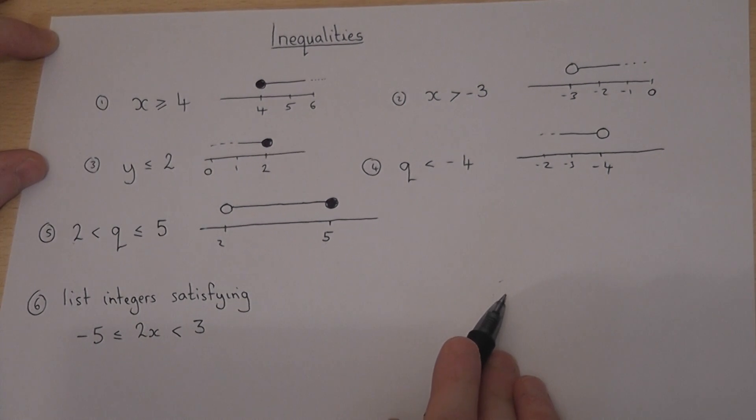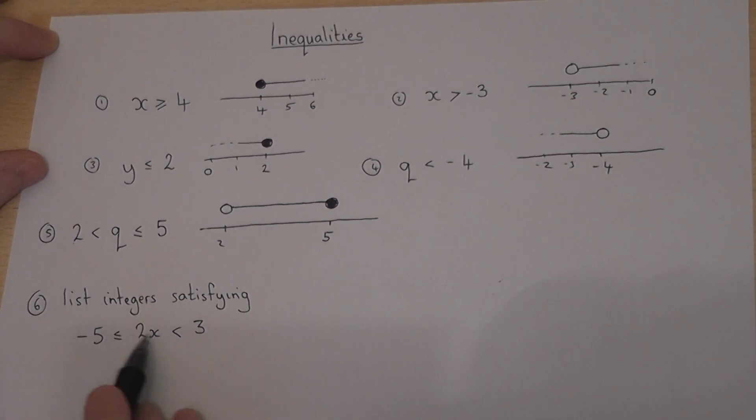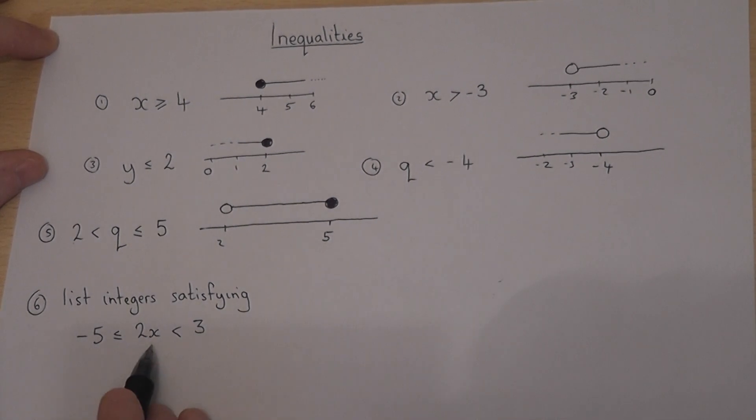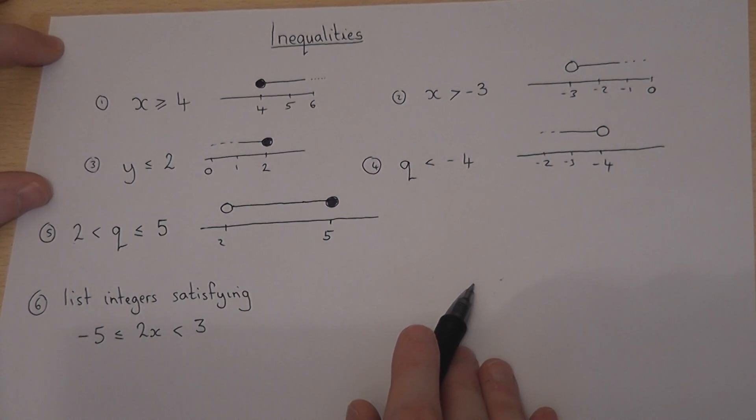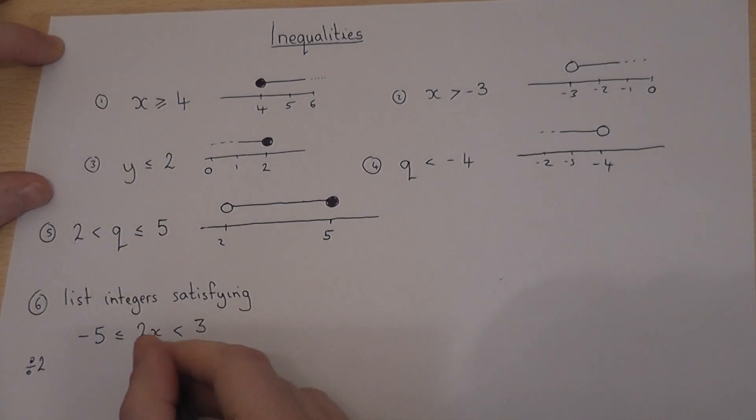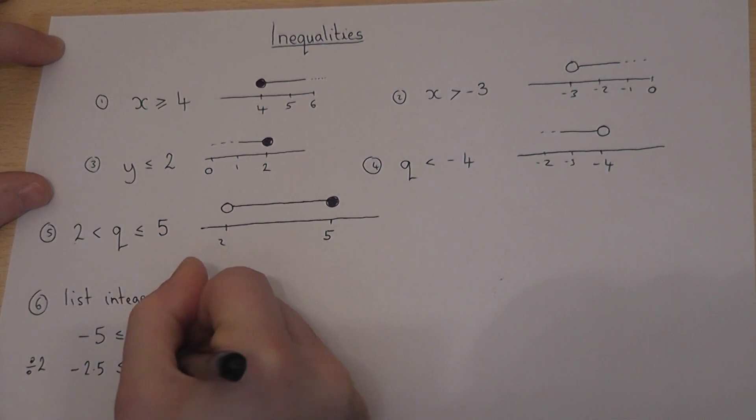Now in some exam questions we're asked to list integers, or whole numbers, which satisfy a given inequality. So 2x lies between minus 5 and 3. Now what we can do here is we can divide by 2 to get x rather than 2x. So if I divide all three parts by 2, I get minus 2.5 less than or equal to x less than 1.5.